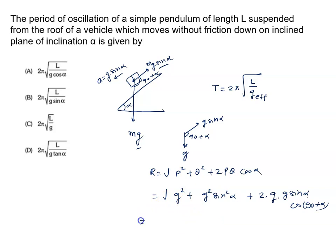We have g square here, also g square, so we take g common. What is inside? Root 1 plus sin square alpha plus 2 sin alpha.